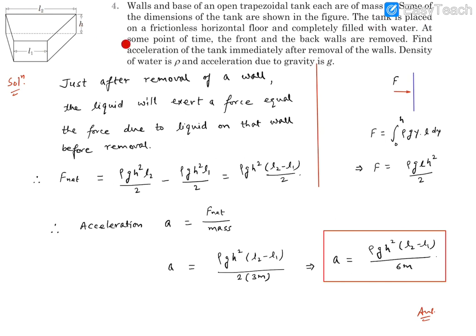The tank is placed on a frictionless horizontal floor and completely filled with water. At some point of time, the front and the back walls are removed. Find acceleration of the tank immediately after removal of the walls. Density of water is rho and the gravity acceleration is g.